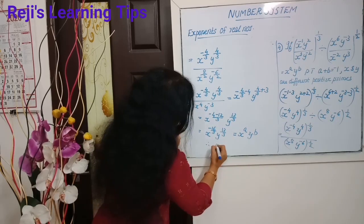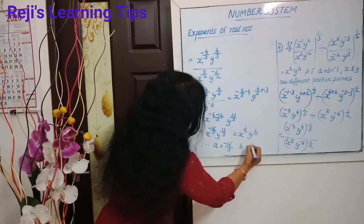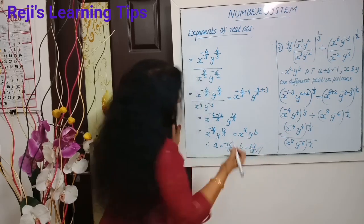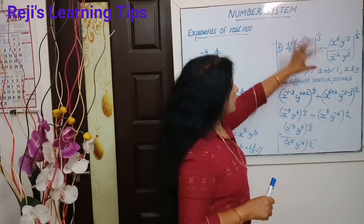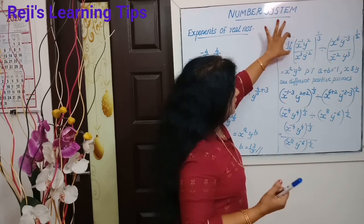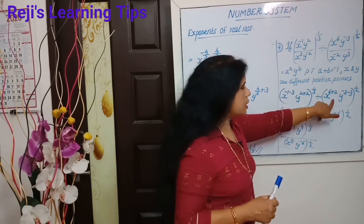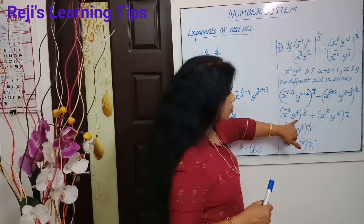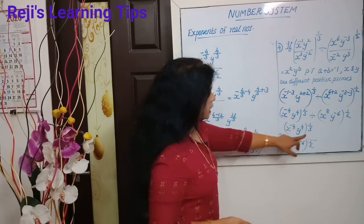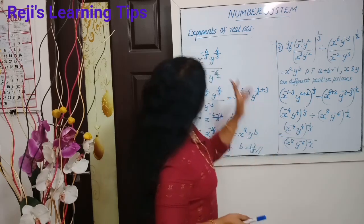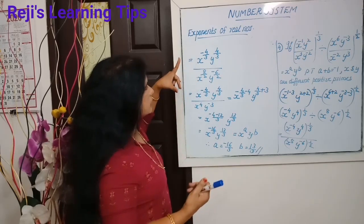Am I correct? So therefore a is equal to minus 16 by 3 and b is equal to 13 by 3. Now, x raised to minus 1, y squared — we start doing this equal to the base. It turns out these are our exponents. In the case of division, we subtract the exponents. So I'm dividing here. This is how we make the difference. We subtract the exponent in the division case.